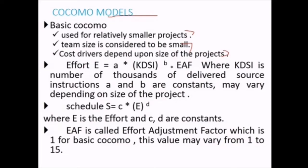The effort E is equal to A × KDSI^B × EAF, where KDSI is the number of Kilo Delivered Source Instructions, and A and B are constants that depend on the size of the project. The schedule S is equal to C × E^D, where the computed effort E is used directly, and C and D are again constants. EAF is the Effort Adjustment Factor, which is 1 for basic COCOMO.